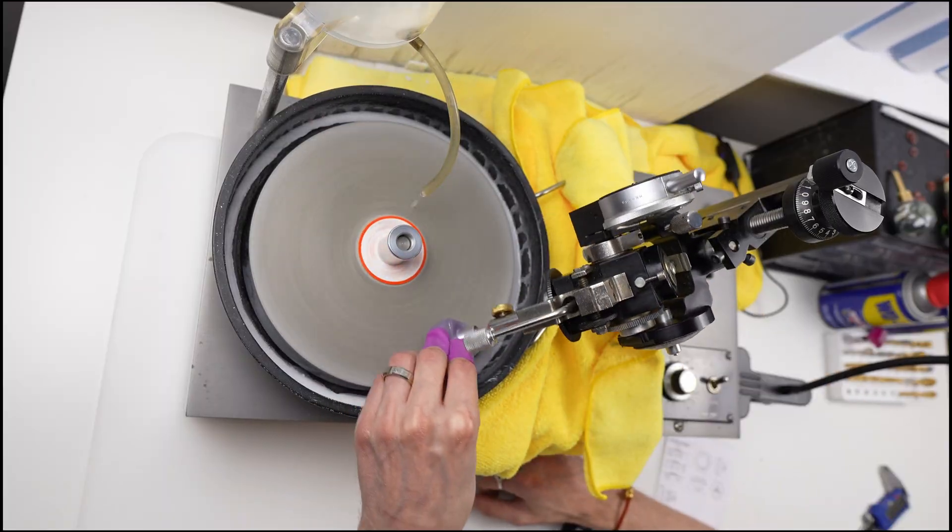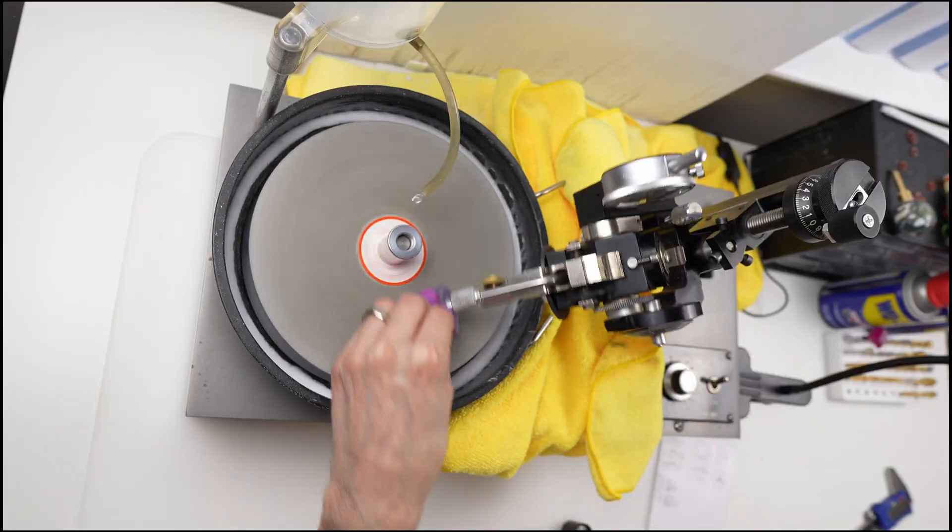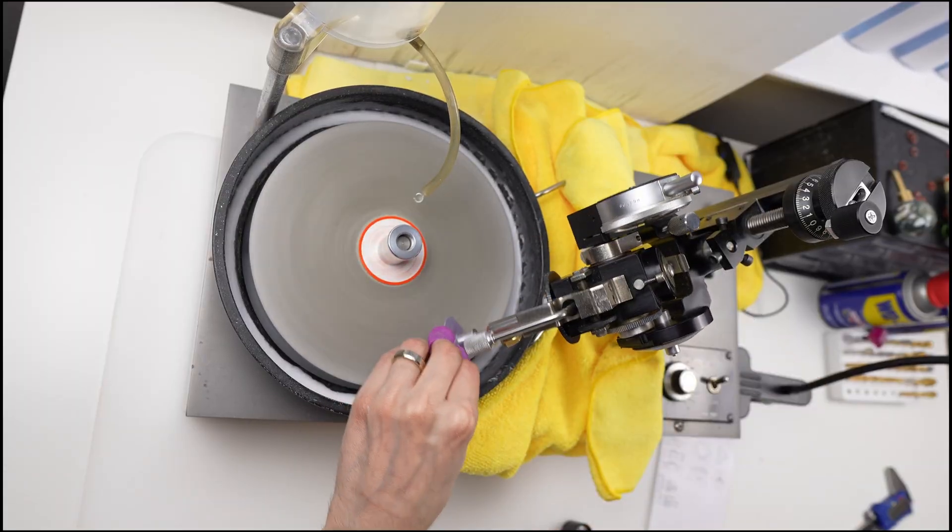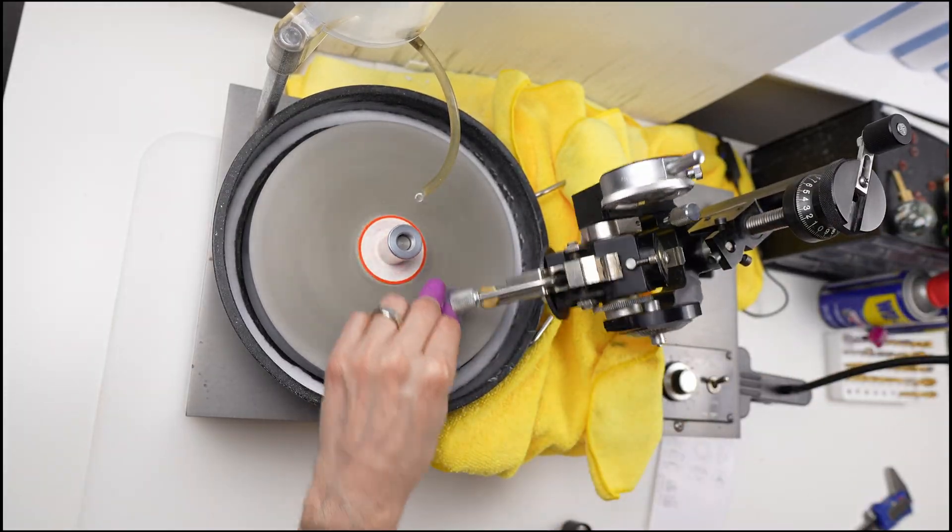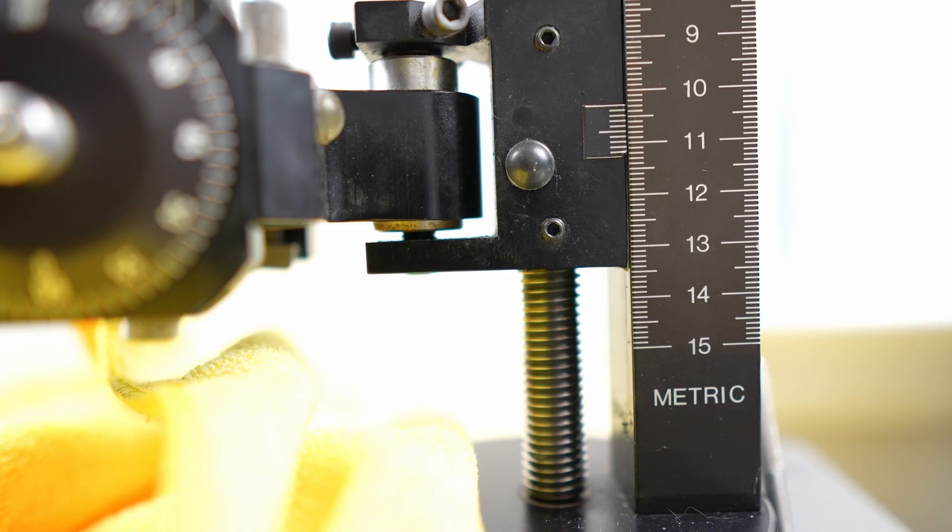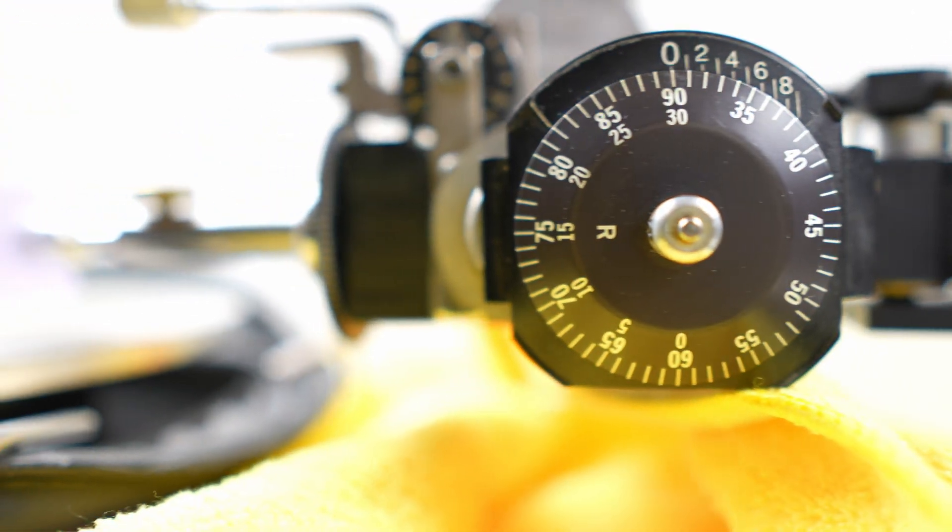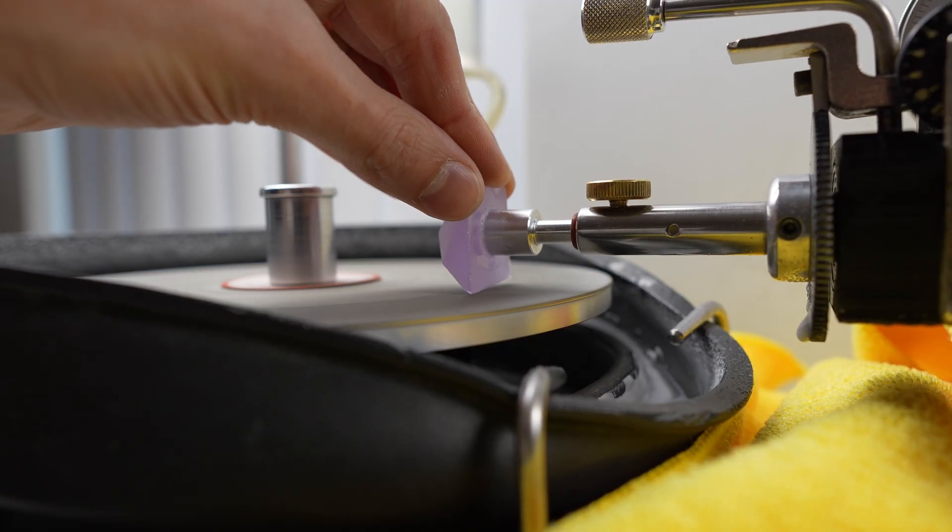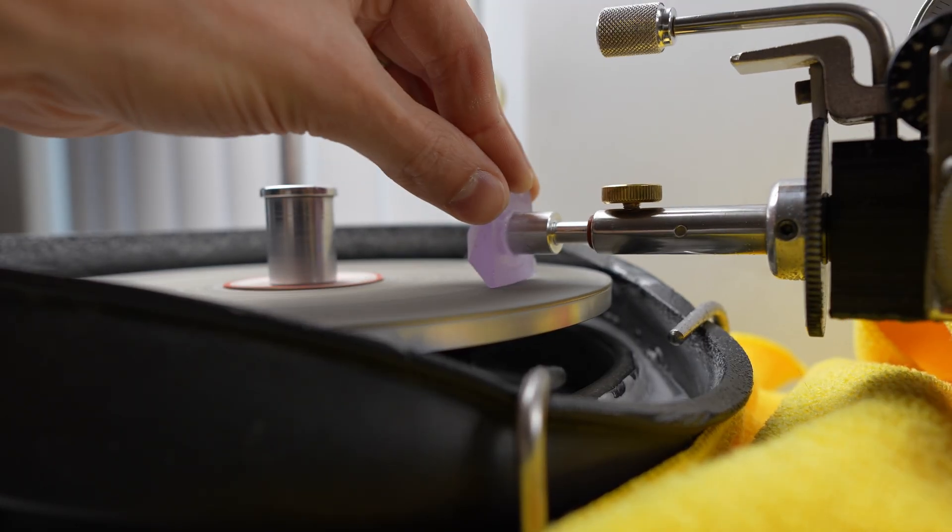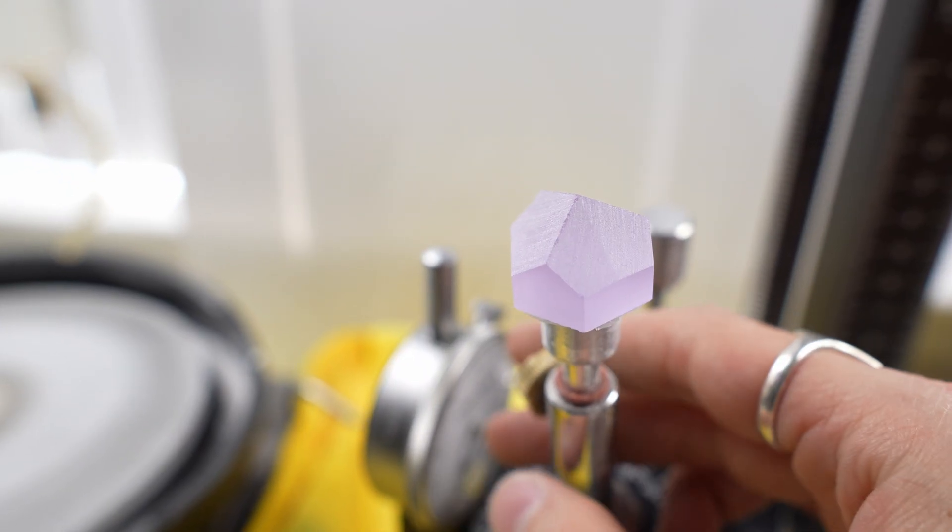Currently I am pre-forming the stone with an 80 grit lap to make the rest of the cutting steps faster, since this is a rather large stone. Now we will lower the mast to cut the girdle of the stone and set the size. Now the stone is getting its shape.